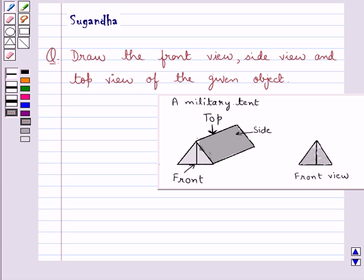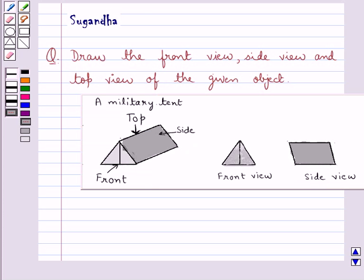Let's see the side view now. This dark grey portion is the side view of this military tent. As you can see, we have drawn the side view also.